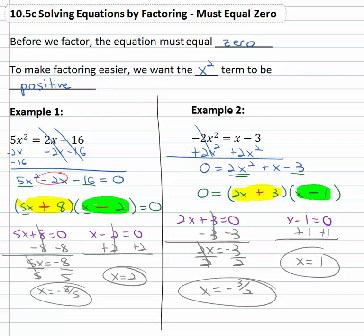When we're solving equations by factoring, the equation must equal zero. Make the equation equal zero, factor it, and set each factor equal to zero.